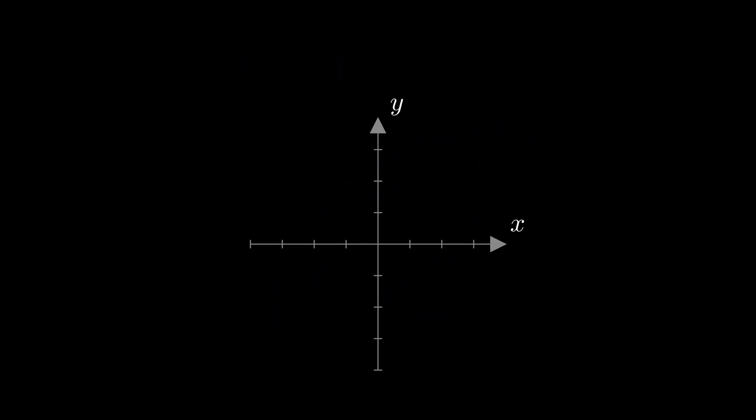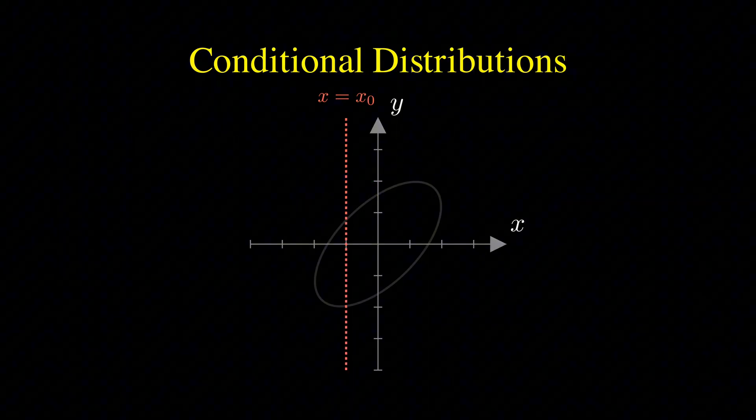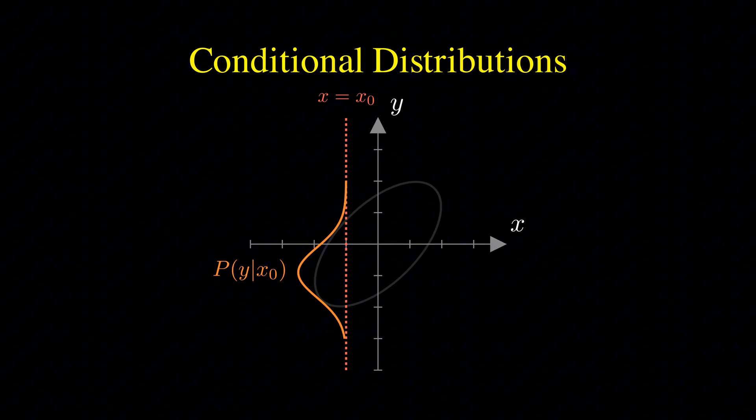However, there's a catch. While the joint distribution is hard, the conditional distributions are often easy. That means if we fix y to a specific value, it's easy to sample a random x. And if we fix x, it's easy to sample a random y. This is the key insight behind Gibbs sampling.